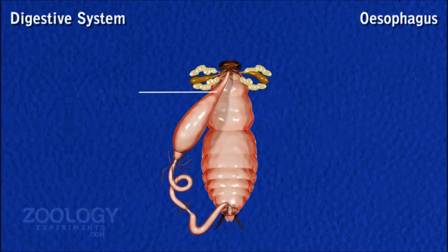Esophagus. From the pharynx arises a long, straight, narrow, and laterally compressed tube called the esophagus. It runs through the neck and enters the thorax to merge with the crop.